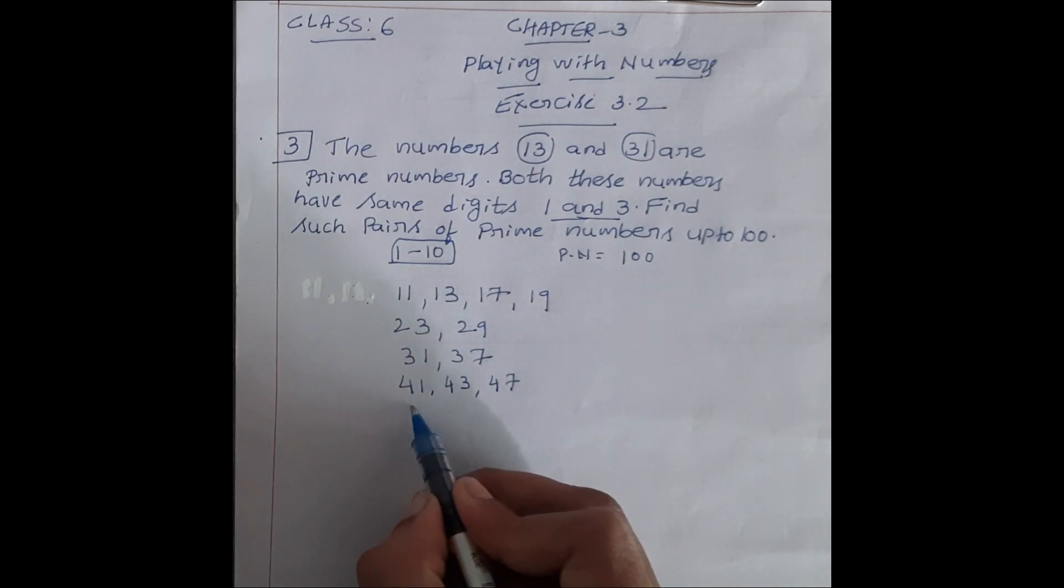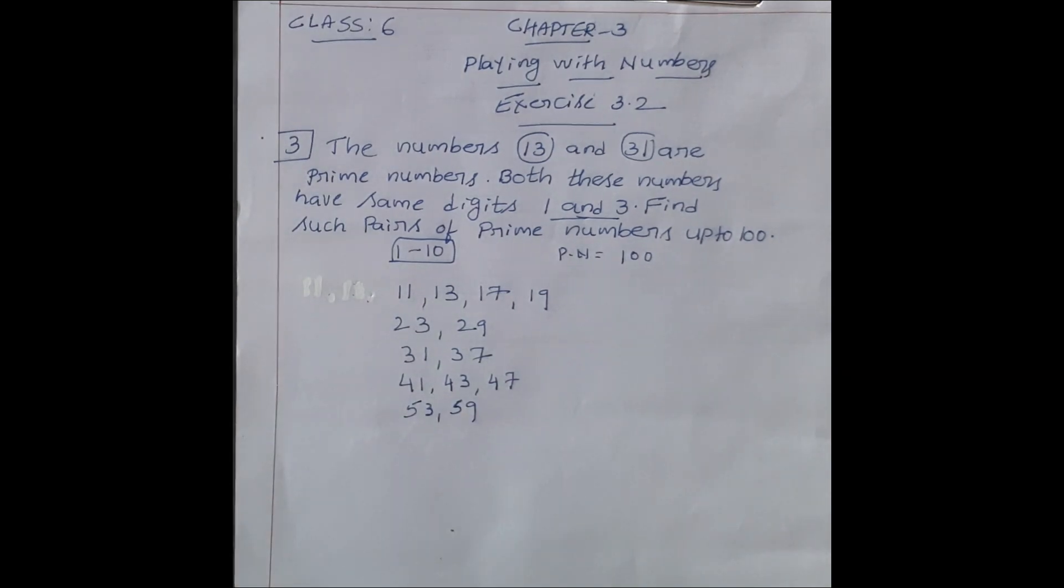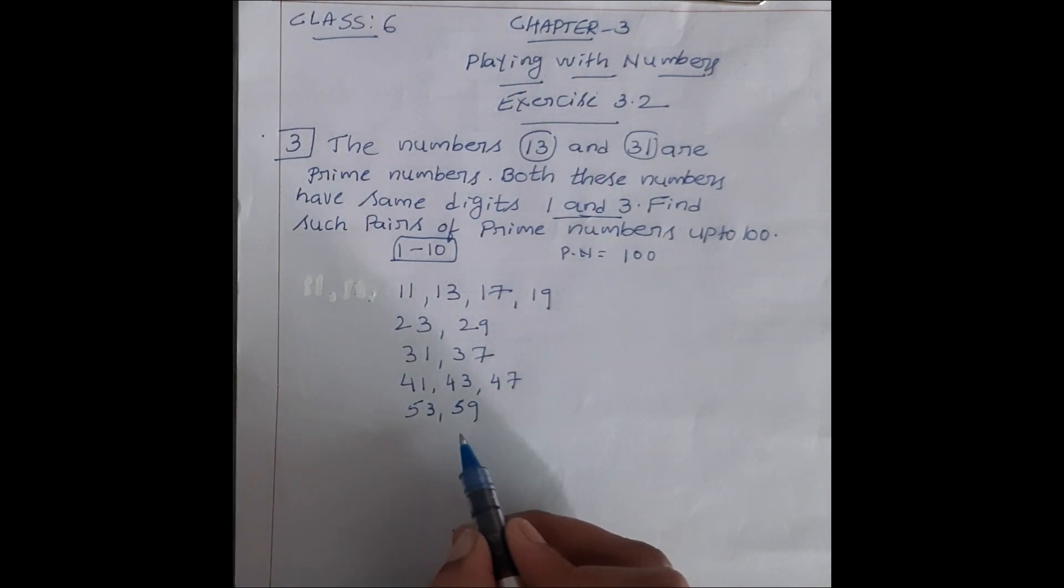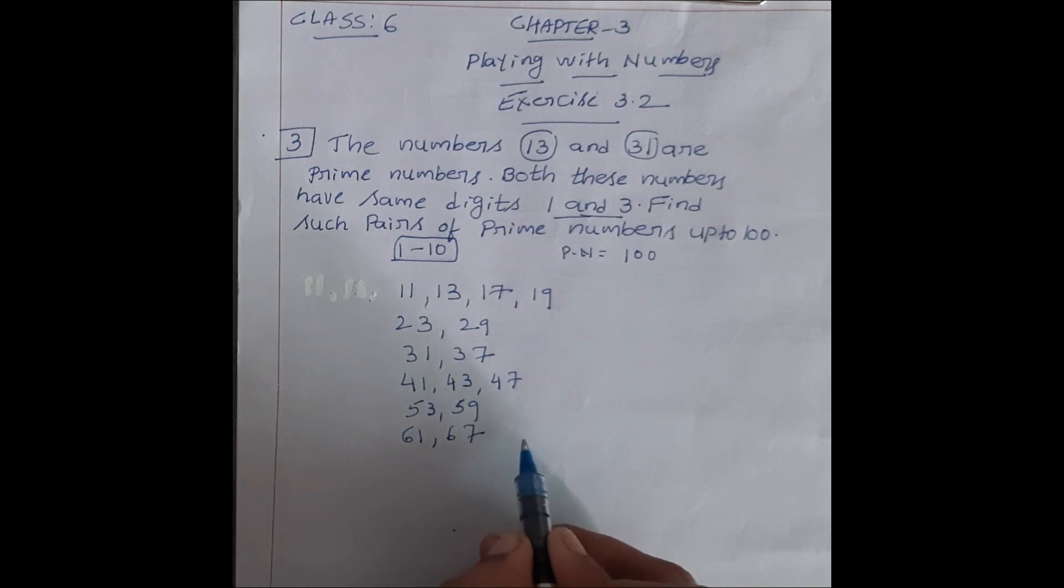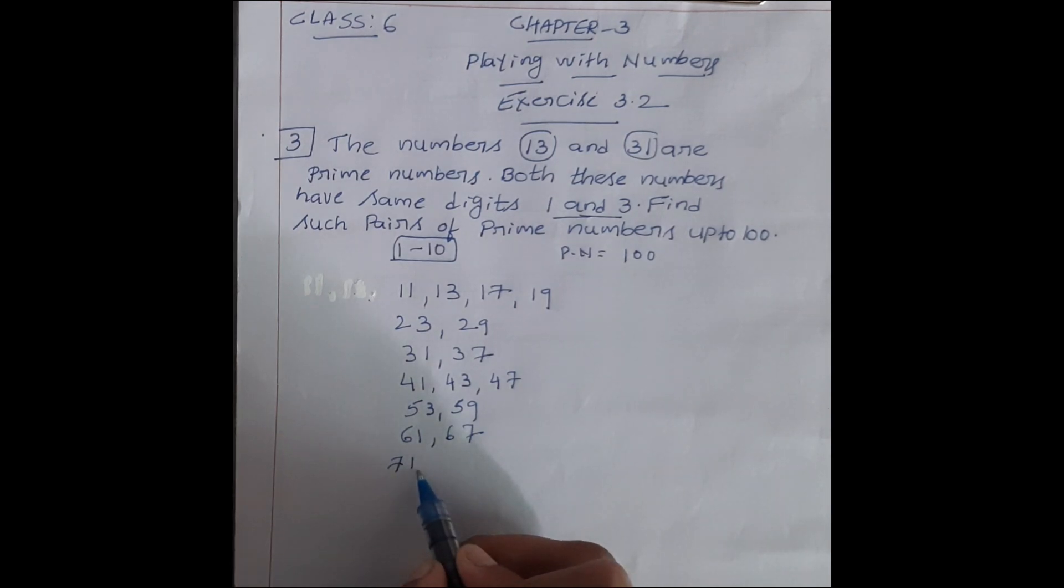30 prime number nahi hai, 31 prime number hai, 32 prime number nahi hai, 33 nahi hai, 34 nahi hai, 35 nahi hai, 36 nahi hai, 37 prime number hai. Next 38 prime number nahi hai, 39 bhi nahi hai, 40 bhi nahi hai, next 41 prime number hai, 42 prime number nahi hai, 43 prime number, 44, 45, 46 prime number nahi, 47 prime number.